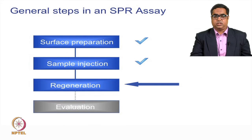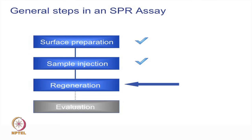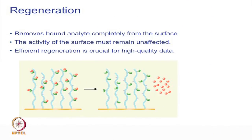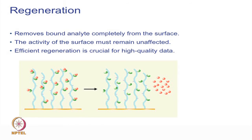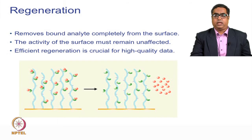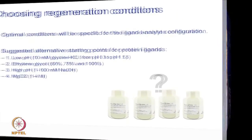Another part of the assay is regeneration. Regeneration involves removing the bound analyte from the immobilized surface so that the surface is regained and useful for another interaction. The activity of the surface must remain unaffected after regeneration, and an efficient regeneration is crucial for high quality data. Regeneration conditions can be identified through regeneration scouting before starting an assay, testing different conditions such as low pH, ethylene glycol, high pH, and magnesium chloride.